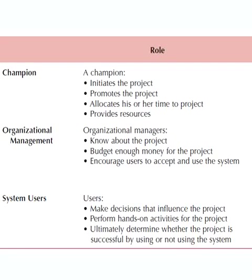The third type of stakeholder is the system users — the end users, the people within the organization who will actually be using the software. It's critically important to have system users on board. Going back to strategic alignment, how well does the system meet their needs and alleviate current problems? How well does it implement new requirements they would like to see? You're going to have the best system in the world, but if the end users are not going to use it, the company will not see any of those benefits.